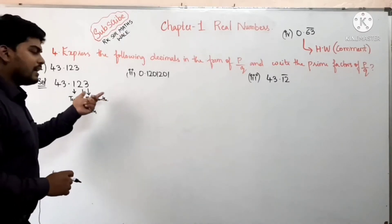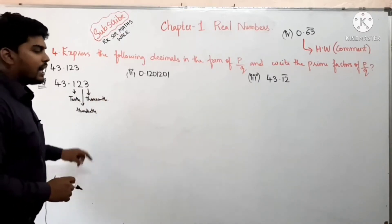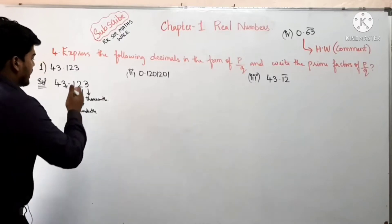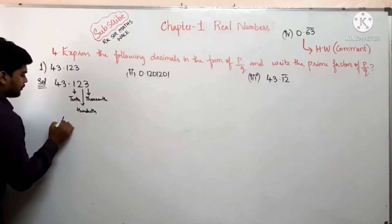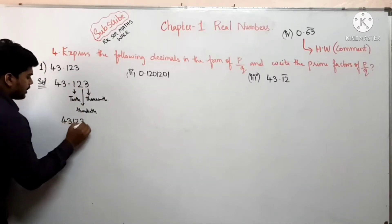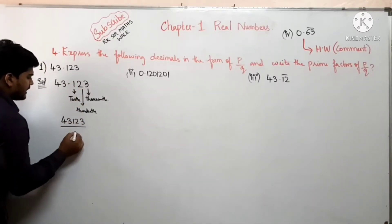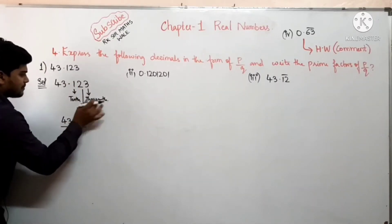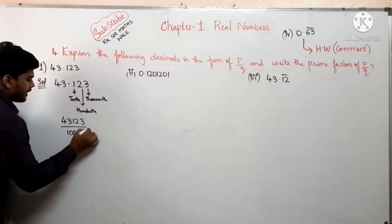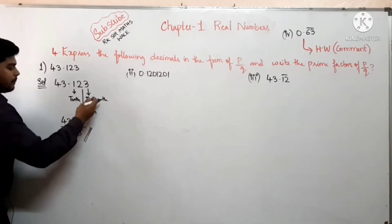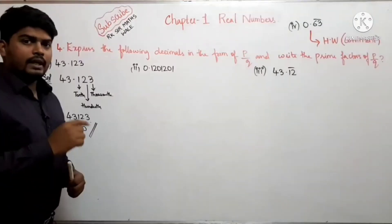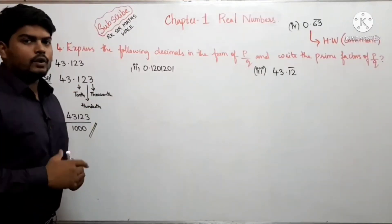Last place value से हमें divide करना होता है। अगर हम decimal हटा दें तो यह बनेगा 43123, और last decimal place है thousandth, तो इसको 1000 से divide करेंगे — बन गया यह p by q form में। अगर decimal repeat नहीं होगा तो इस तरह करना है।